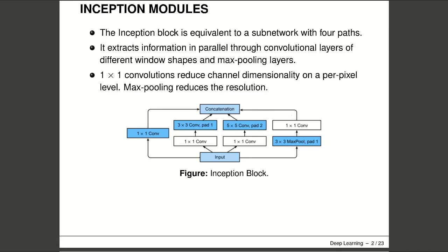To gain some intuition for why this network works so well, consider the combination of filters. They explore the image with a variety of filter sizes, which means that detail at different extents can be recognized efficiently by filters of different sizes. At the same time, we can allocate different amounts of parameters for different filters.